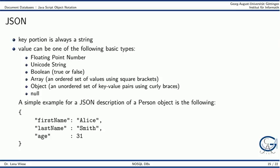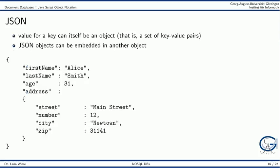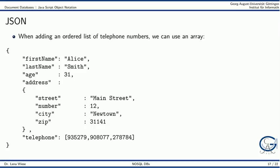In the example you see a simple JSON object describing a person. It consists of two key value pairs having string as the value data type and one key value pair having a number as the value data type. To support nesting, a value for a key can itself be an object. In other words, a JSON object can be embedded in another object. In our example we see that the key address contains a nested object. As an example for using an array consider an ordered list of telephone numbers. These are stored under the key telephone.